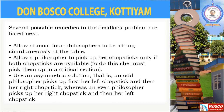Some possible remedies to the deadlock problem are: first, allow at most four philosophers to be sitting simultaneously at the table; second, allow a philosopher to pick up a chopstick only if both chopsticks are available — meaning one of the processes is available in the critical section; and third, use an asymmetric solution — if it is an odd philosopher, they pick up the left chopstick first then the right, and if even, they pick up the right chopstick first then the left. By applying these remedies we can avoid deadlock to an extent.